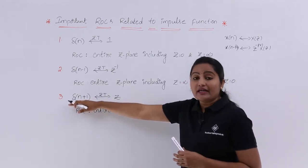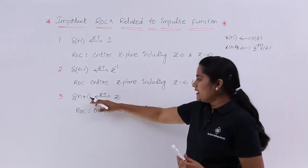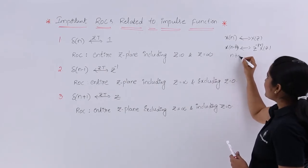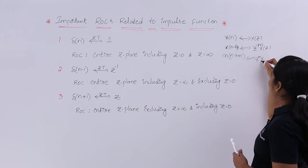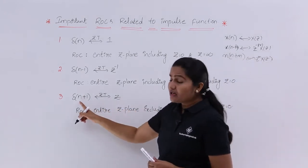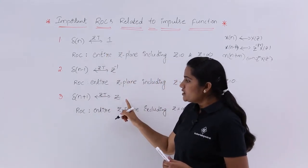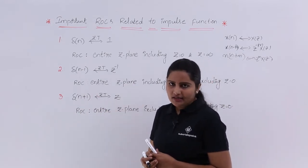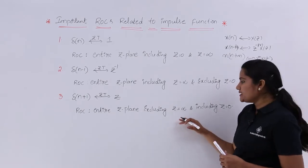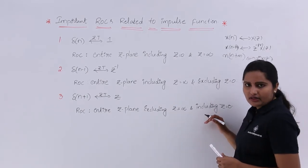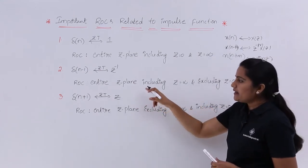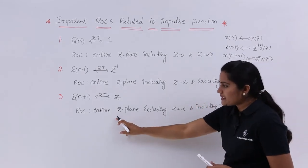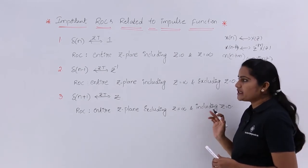In the same way we have δ[n+1], the positively shifted impulse, for which the Z-transform is Z. Using the time shifting property: X[n+m] has Z-transform Zᵐ·X(Z). So δ[n+1] gives Z¹·1 = Z as its Z-transform. For this signal the ROC is the entire Z-plane excluding Z=∞ and including Z=0. These two cases are in reverse: for δ[n-1] it is entire Z-plane including Z=∞ excluding Z=0, while for δ[n+1] it is entire Z-plane excluding Z=∞ and including Z=0.